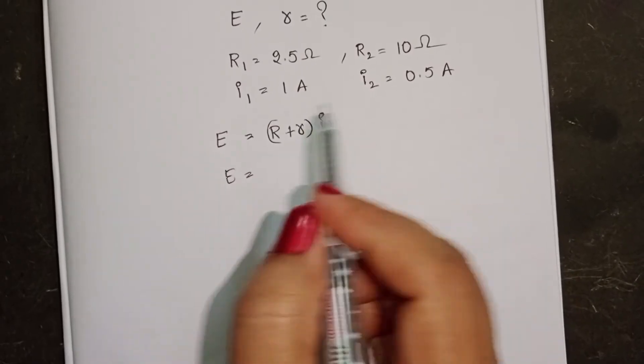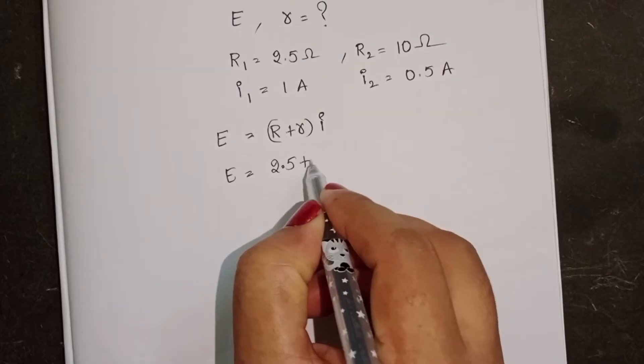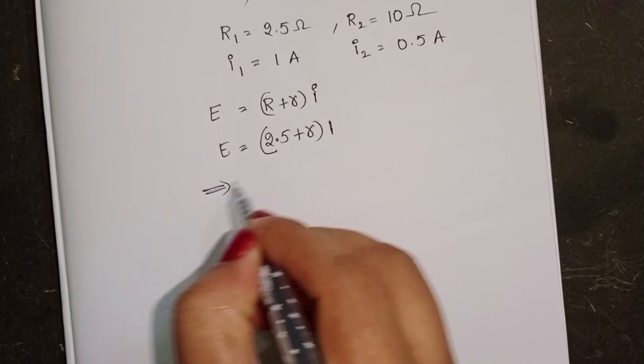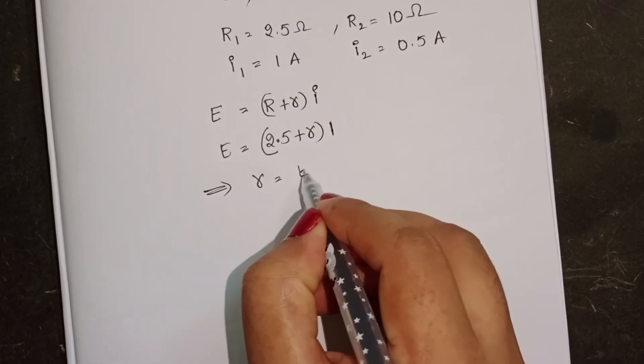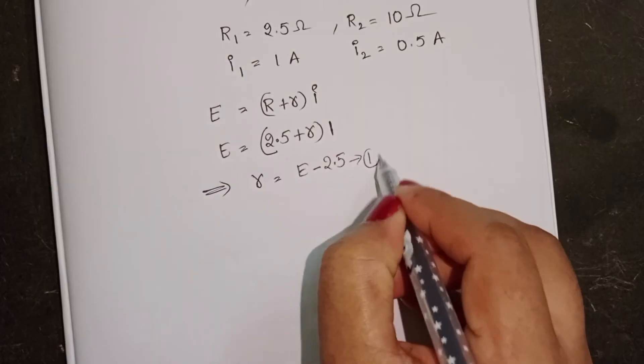E is equal to R value is 2.5 plus R into current 1A. From this, internal resistance is equal to E minus 2.5A. Take this as equation 1.